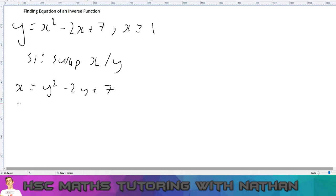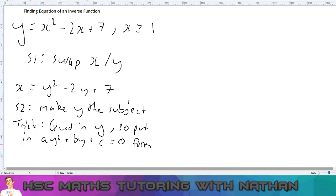And step 2 is basically make y the subject, and this is where the problem lies. How do you make y the subject in this equation? And this is a very popular trick. So the trick here is if you look at the y, in order to make y the subject, you'll notice this is a quadratic equation in y. So the trick here is you get a quadratic in y, so put in a y squared plus by plus c equals zero form, then use the quadratic formula.